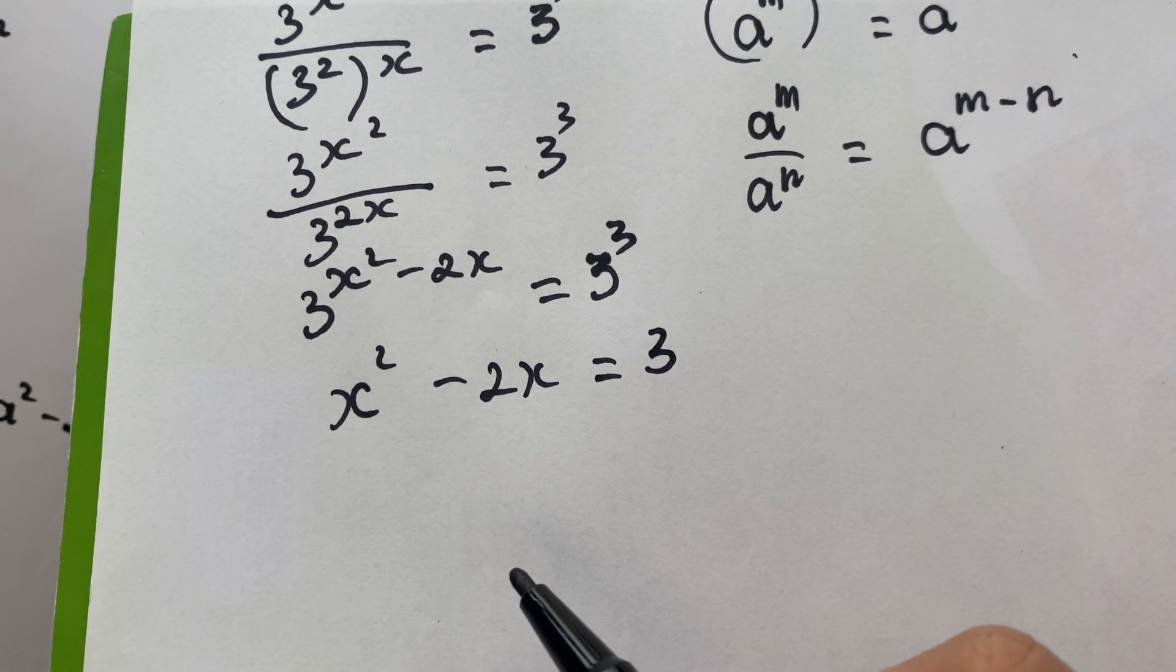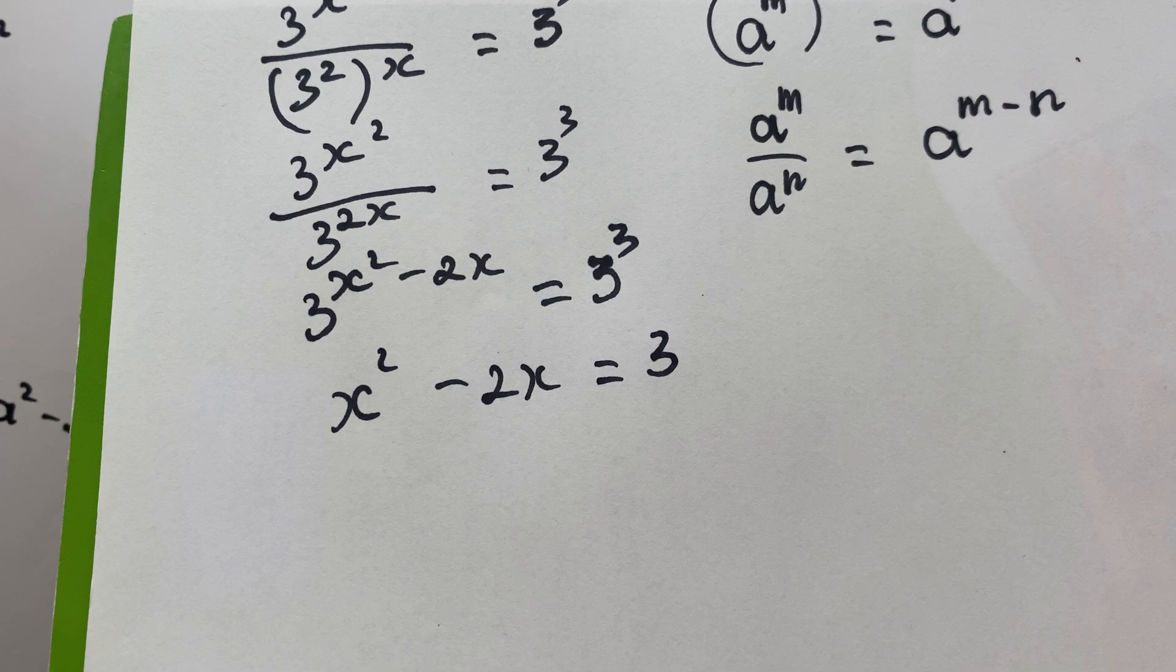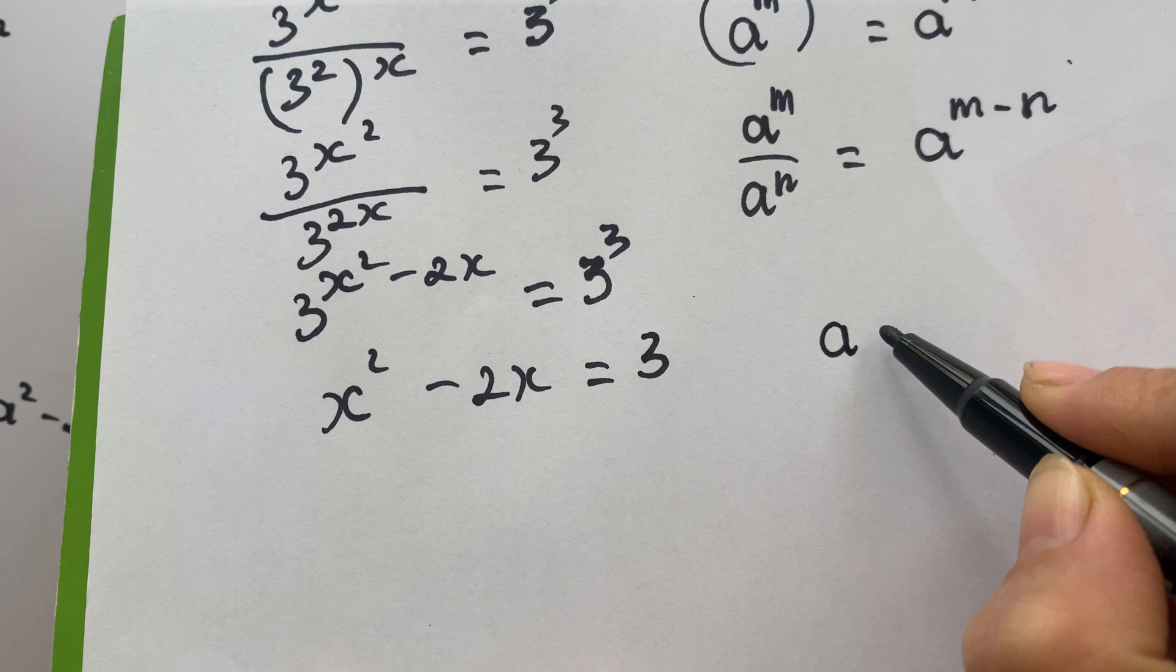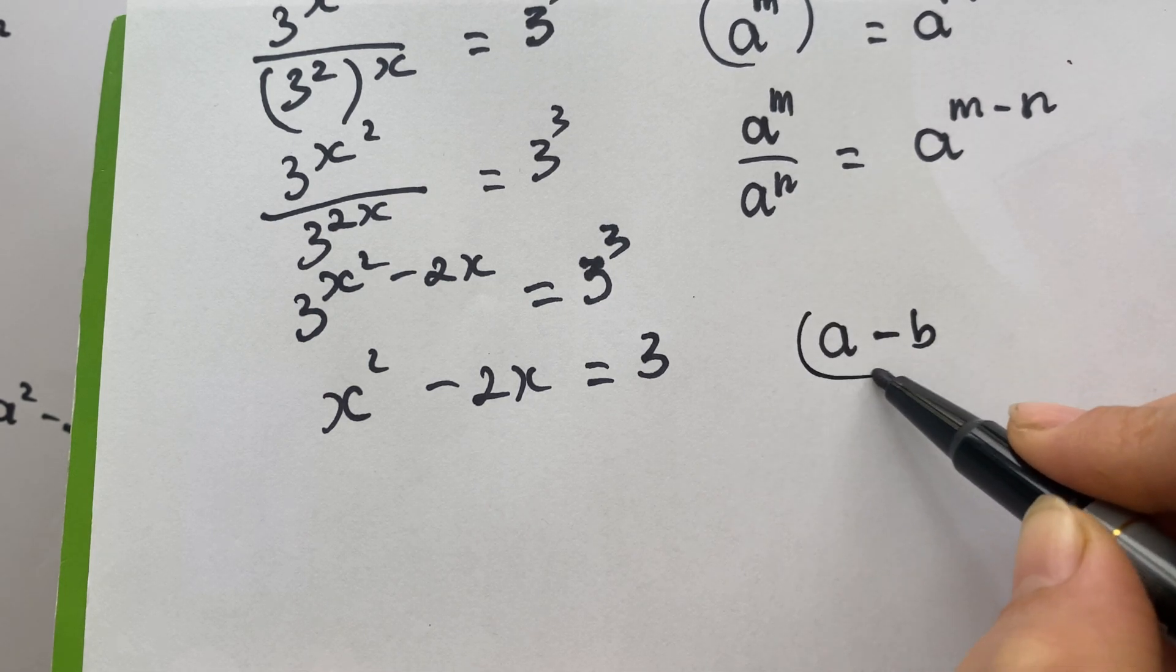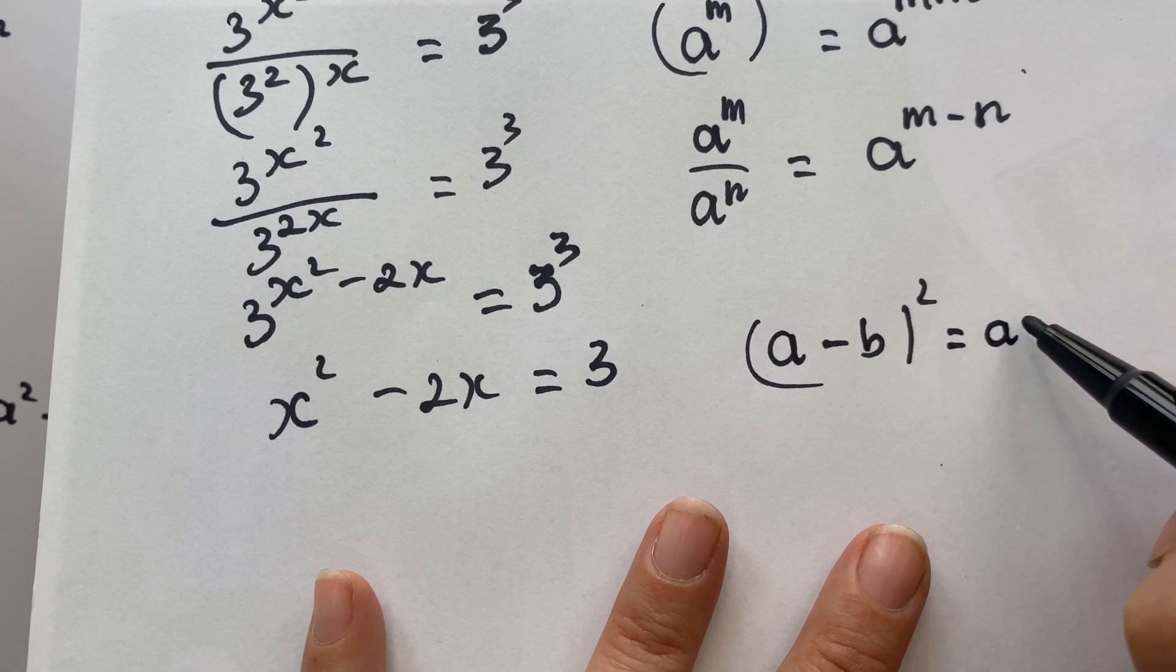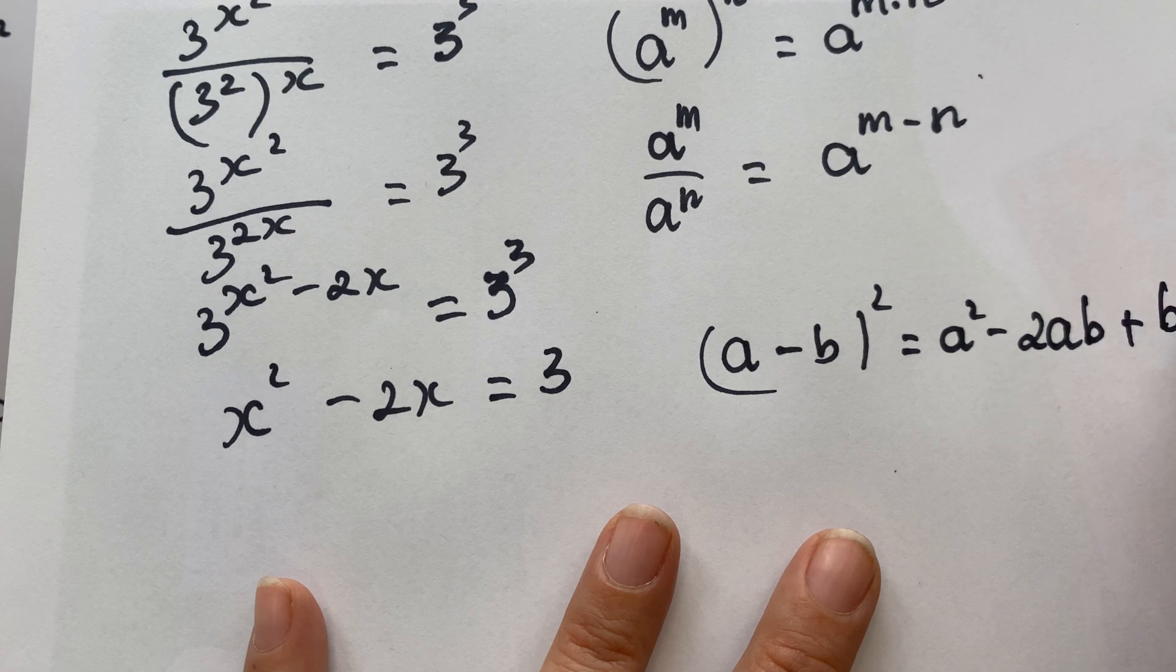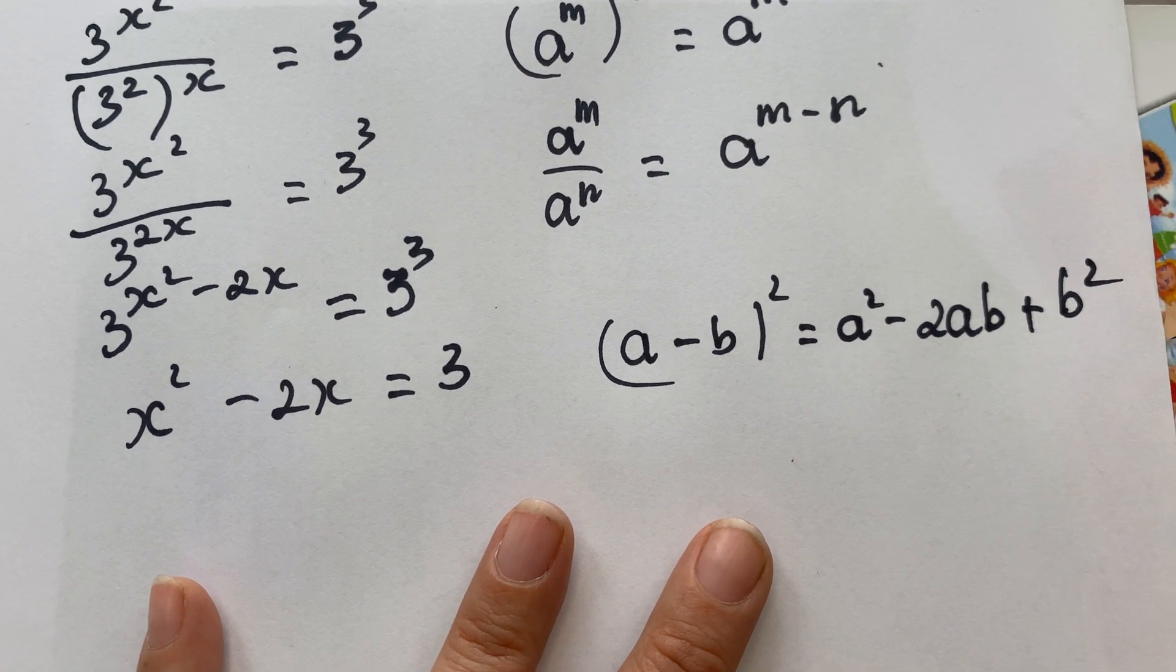For the equation we need to apply the identity. Here you need to apply the difference of squares: A minus B bracket square equals A square minus 2AB plus B square.